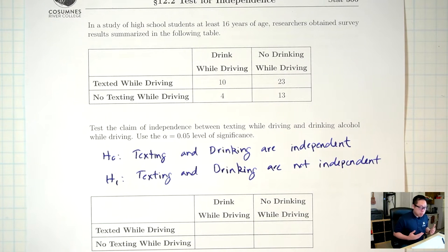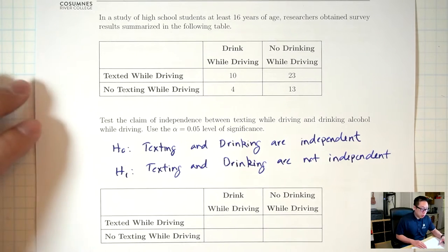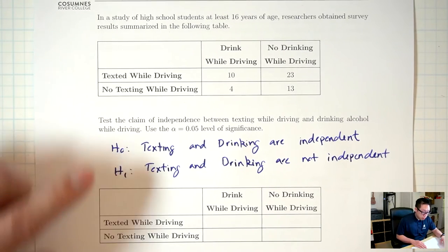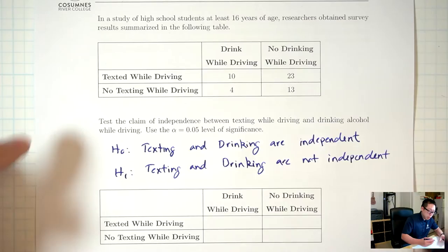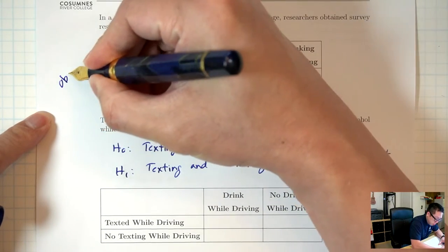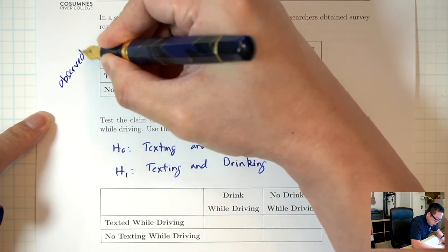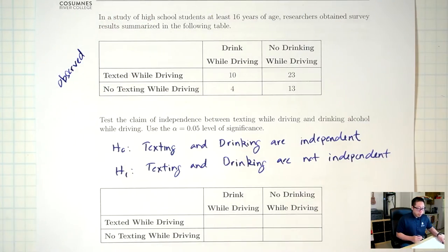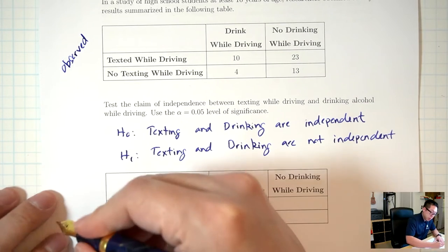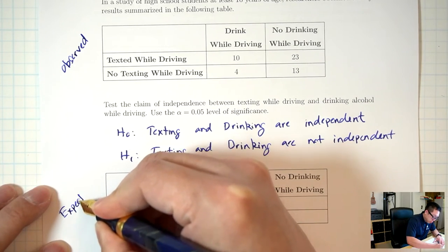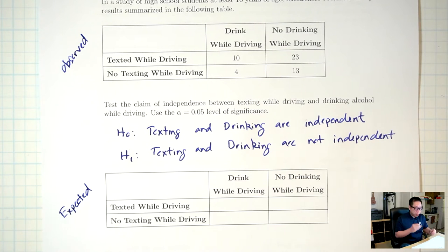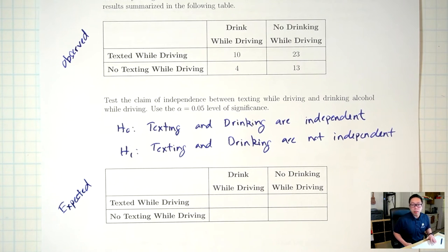And just like the goodness-of-fit test, we're going to be comparing observed counts with expected counts. The original table contains our observed counts, and this new table will contain the expected counts. What's different is how you calculate the expected counts for a test for independence.